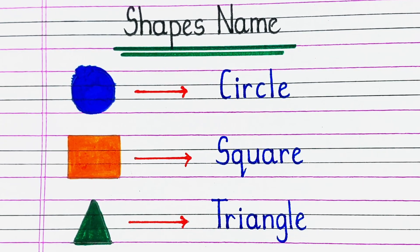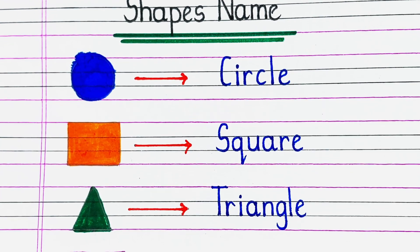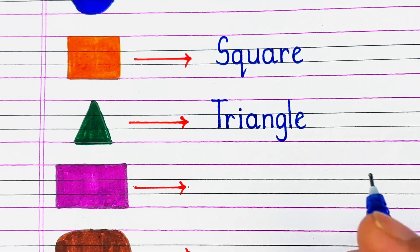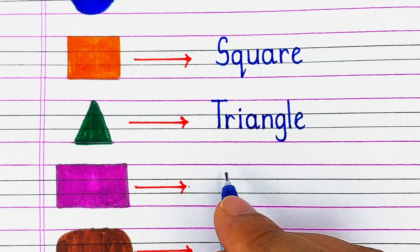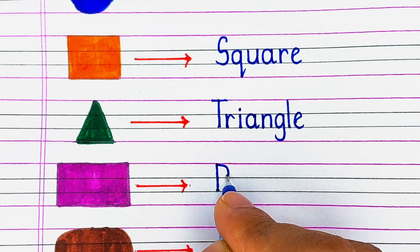Next is the shape with 3 sides which can be equal or unequal, it is called a triangle.